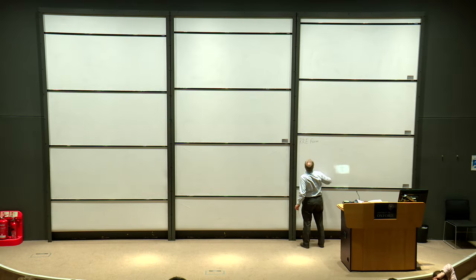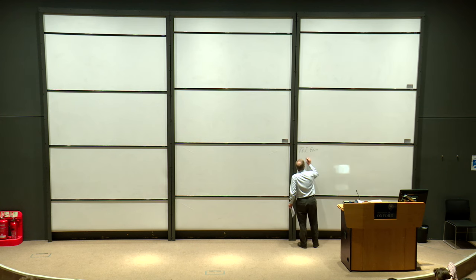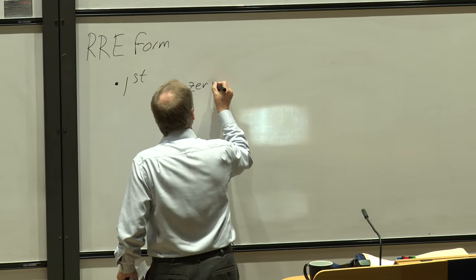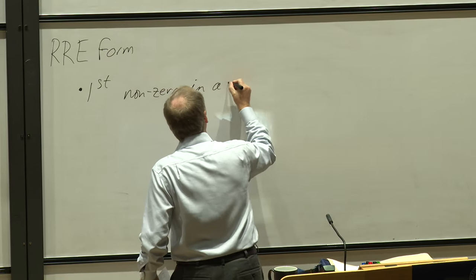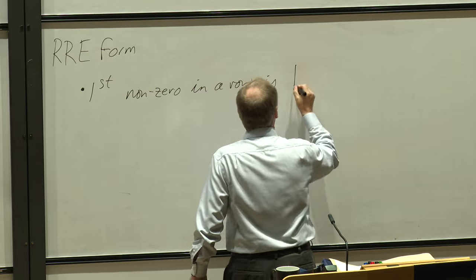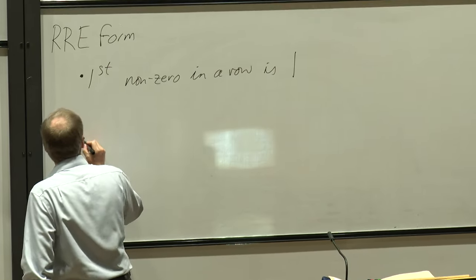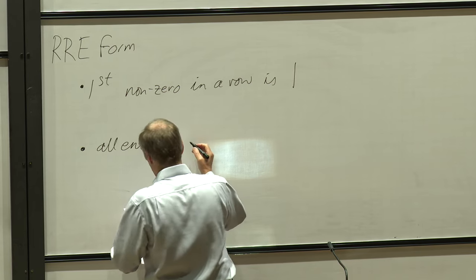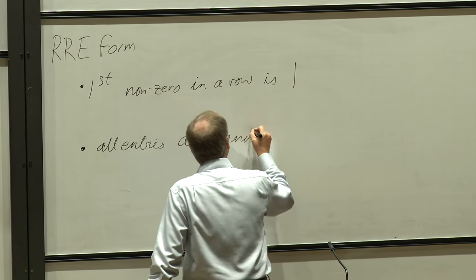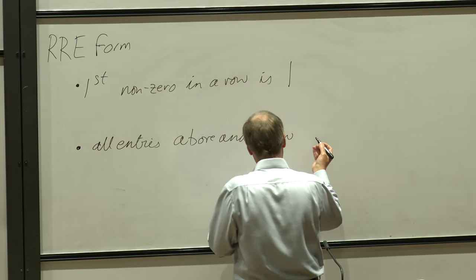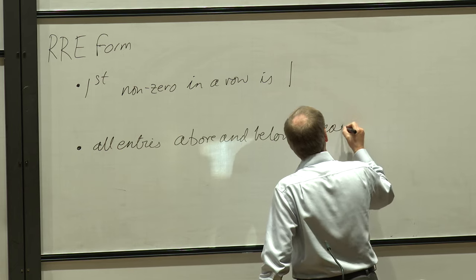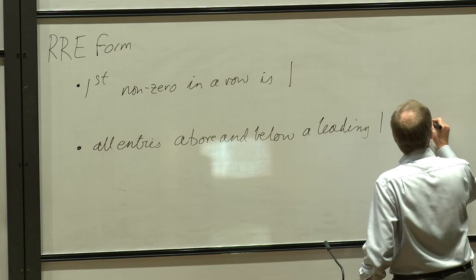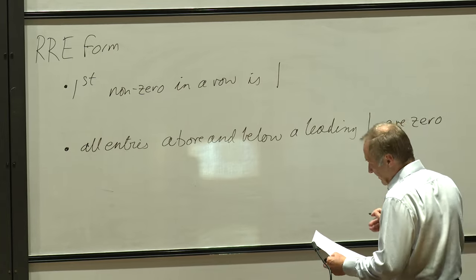So I said I would say what reduced row echelon form really is. The first non-zero entry in any row is 1. All entries above and below a leading 1 — that is, a 1 at the first non-zero position in a row — are 0. All entries above and below one of these 1s are 0 in that column.